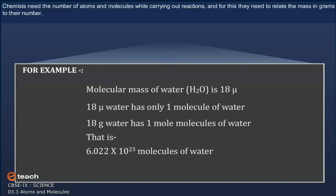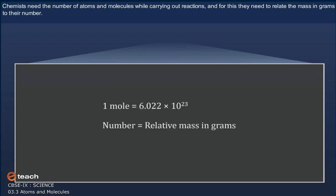Chemists need the number of atoms and molecules while carrying out reactions, and for this they need to relate the mass in grams to the number. It is done as follows: 1 mole = 6.022×10²³ number = relative mass in grams.